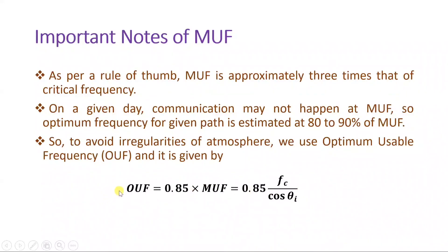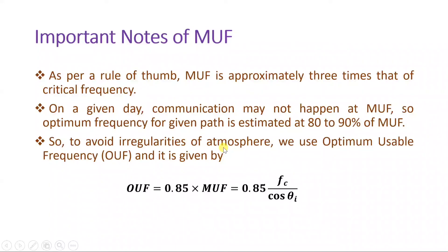Optimum usable frequency is what we use in communication for sky wave propagation to ensure proper communication without ambiguities. We can avoid irregularities of the atmosphere this way, since atmospheric parameters change with respect to daytime as well as season. Those irregularities can be avoided by lowering the maximum usable frequency by 85 percent, and that is the optimum usable frequency. This is how we communicate in sky wave propagation.